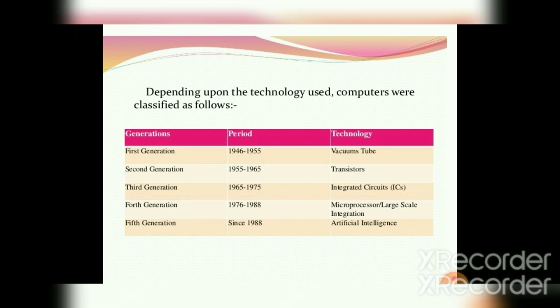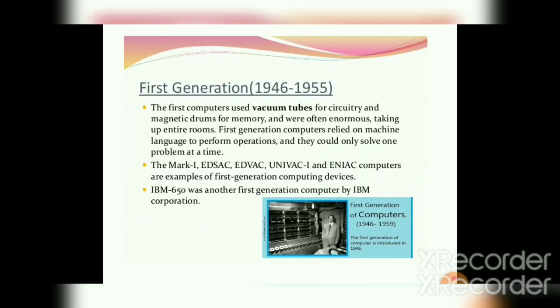Now let us learn about each generation of computers in detail along with the advantages and disadvantages. In the first generation of computers, the main component is vacuum tubes. These are enormous — that means they are very huge in size and occupy a very large space. These machines use machine language, which is nothing but zeros and ones.